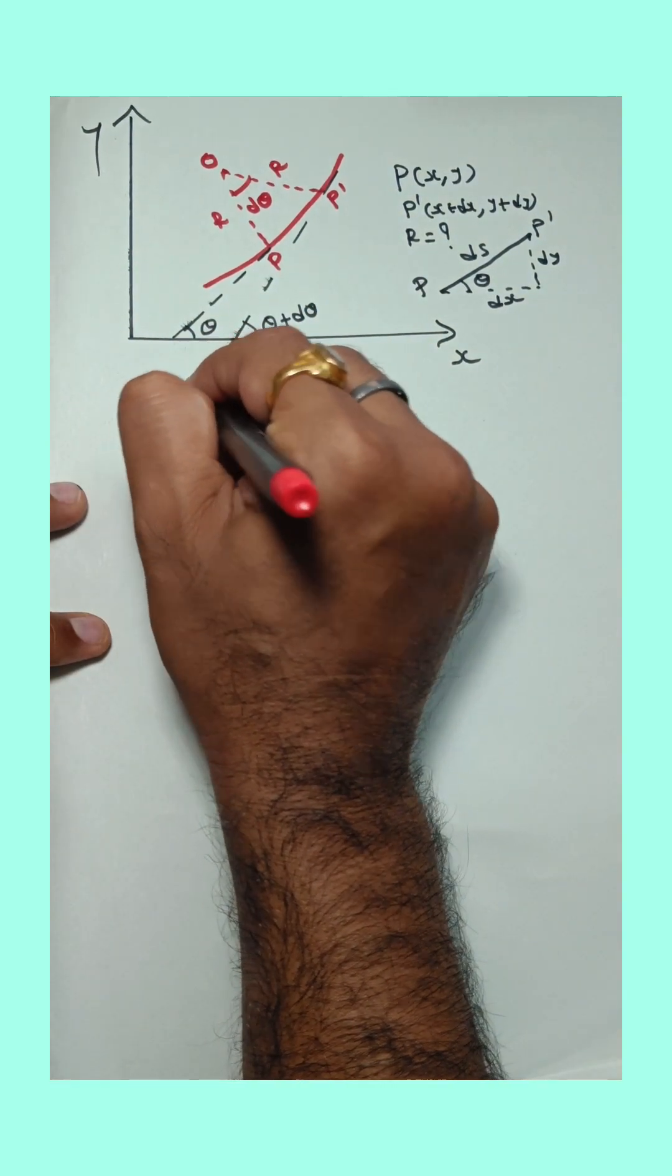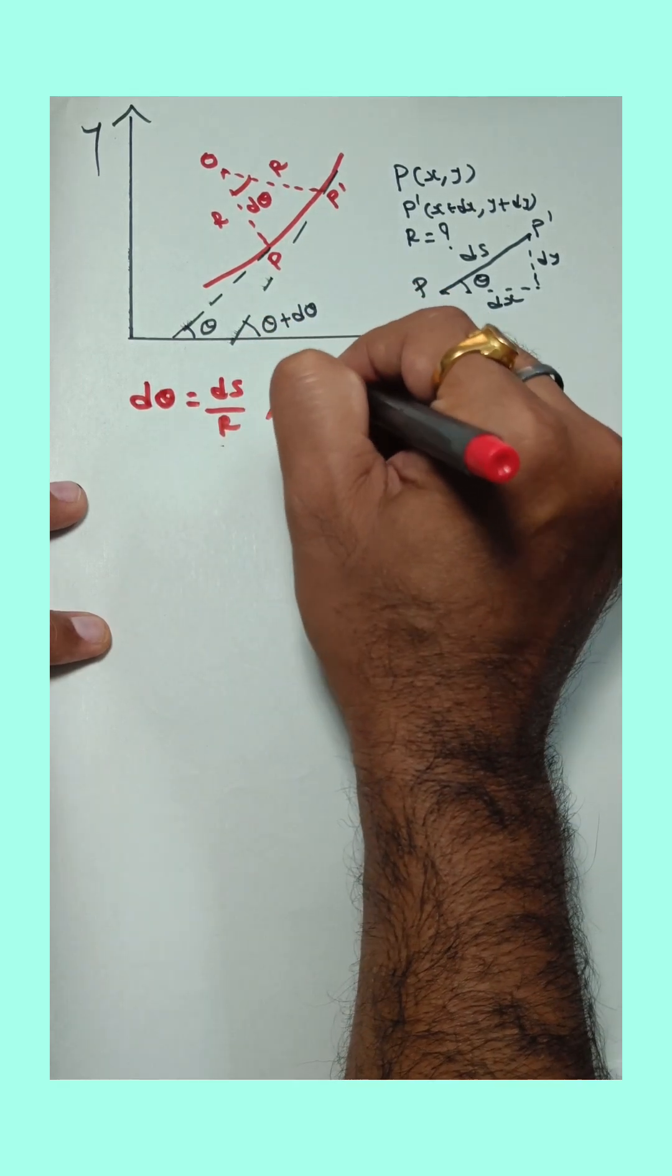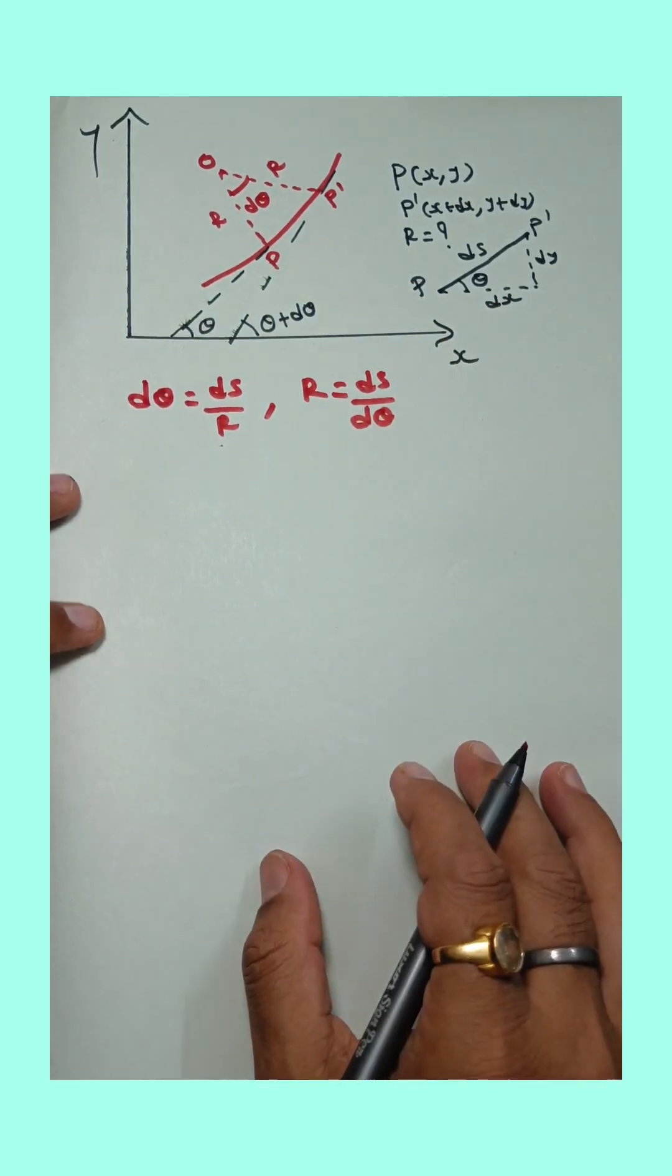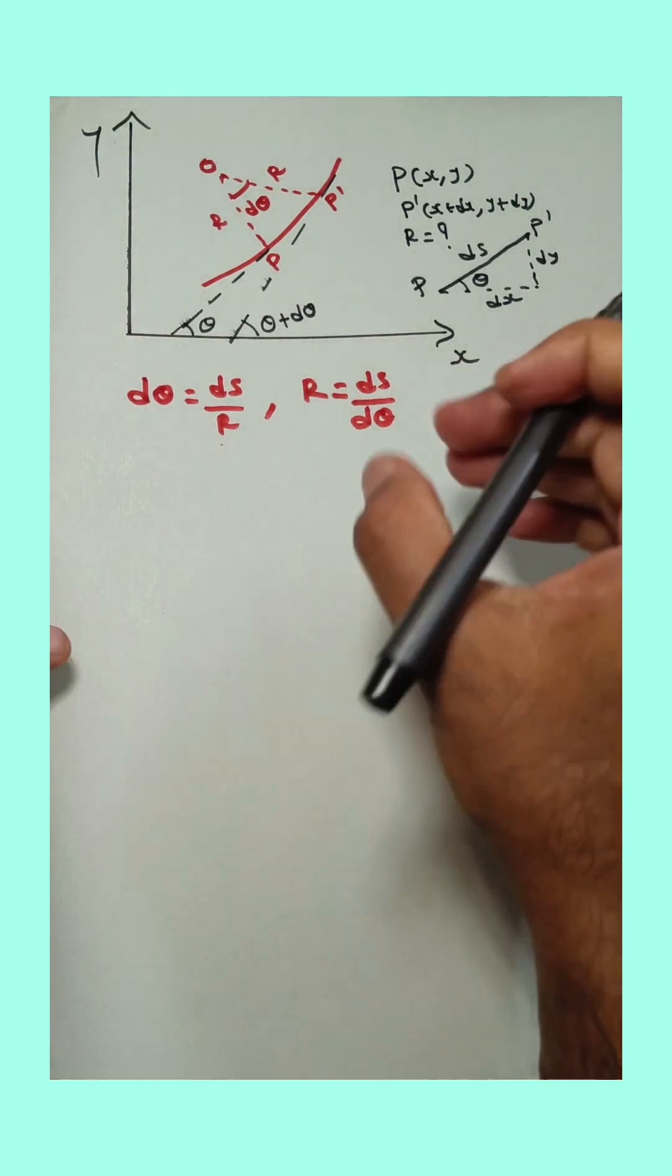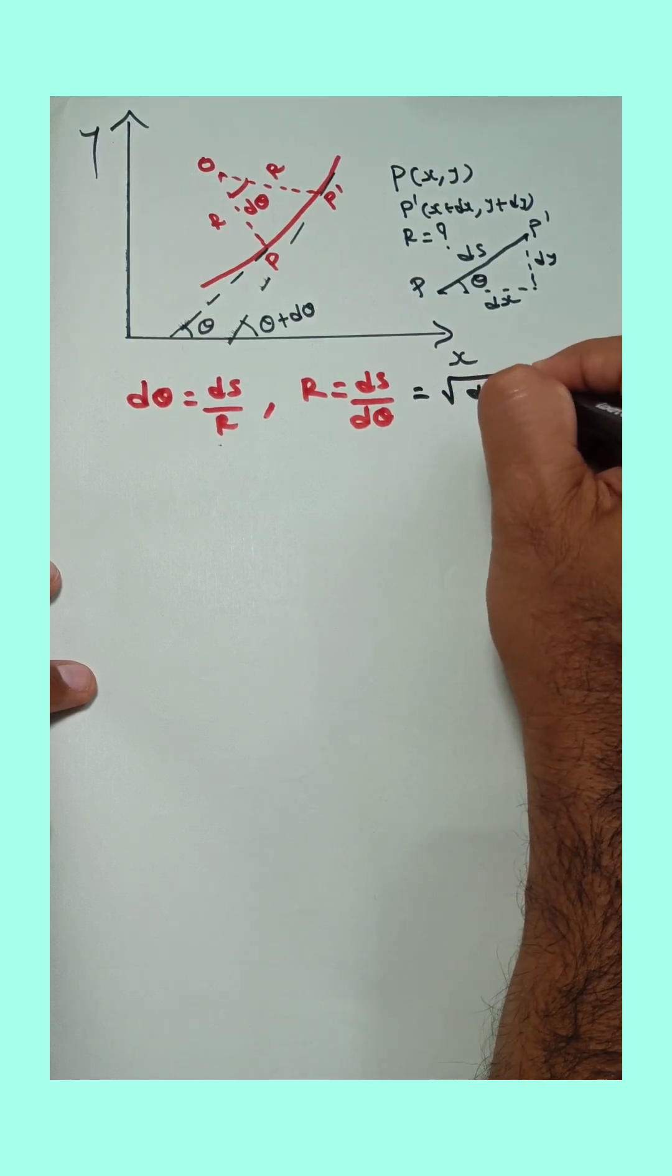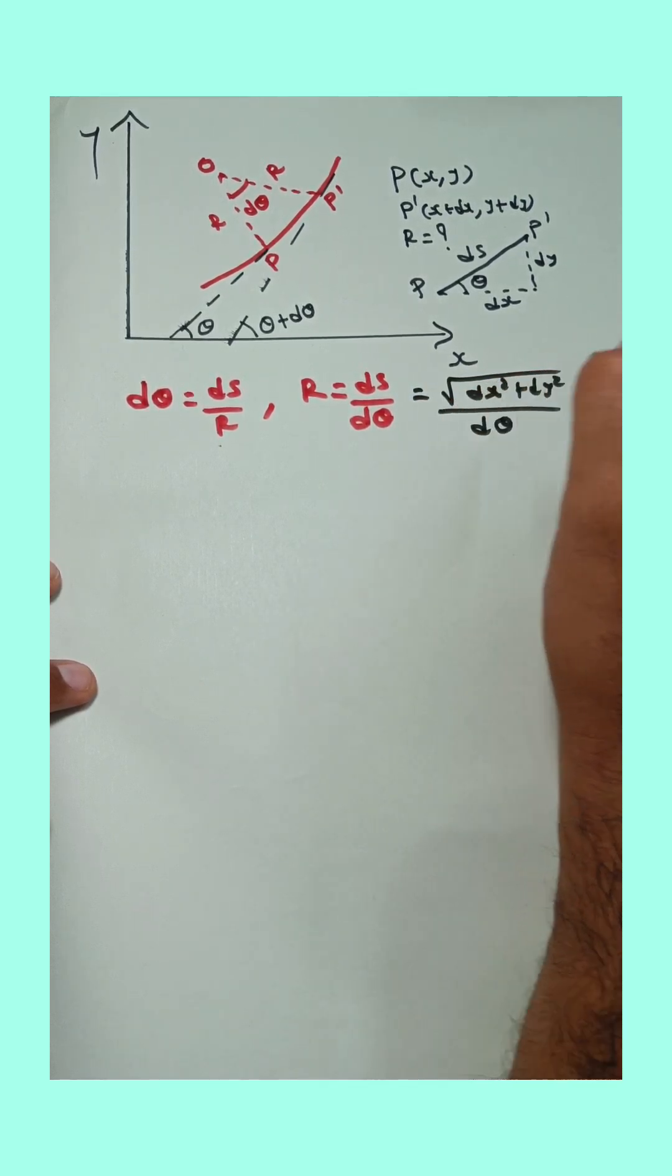So here dθ is equal to—here arc is ds and radius is R. So from this, R is equal to ds upon dθ. But what is the equation of ds from Pythagoras? From Pythagoras, here ds is equal to root of dx square plus dy square upon dθ.